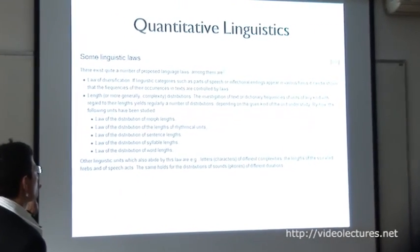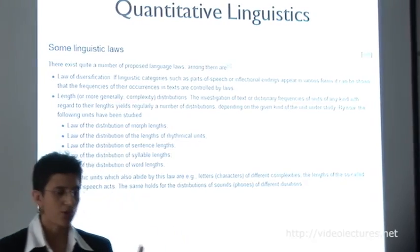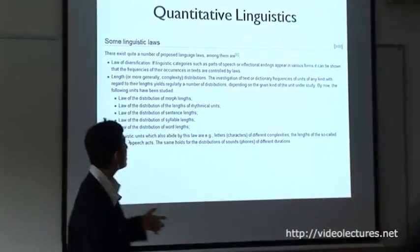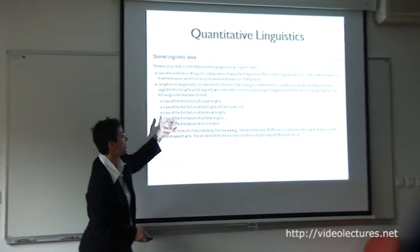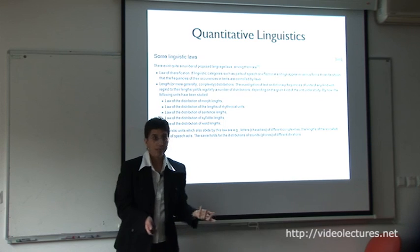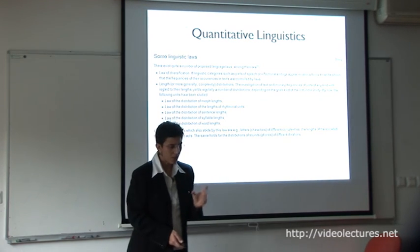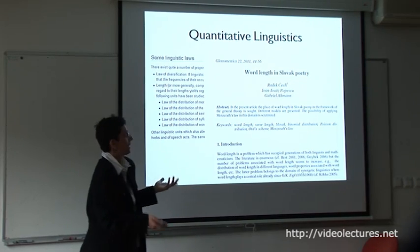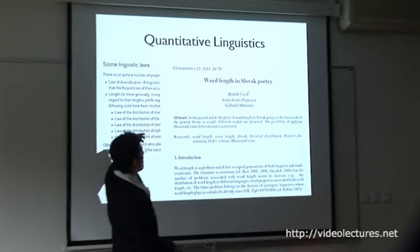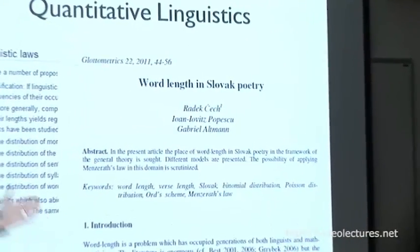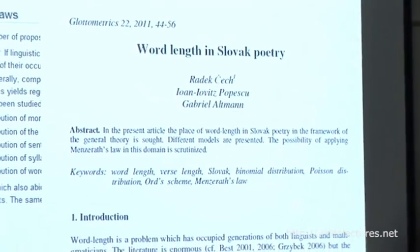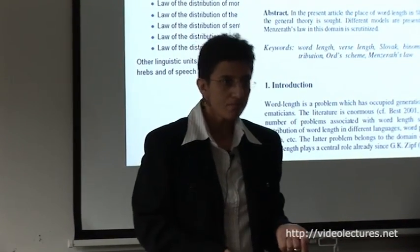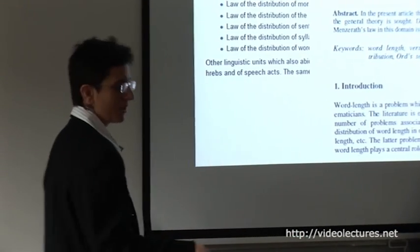One of the earlier datasets we found that looked at count data not really following a Poisson was word lengths. In quantitative linguistics there's a lot of interest in the distribution of lengths of words, sentences, and syllables. I have a small example later from a Hungarian dictionary. There's also a relatively recent paper about word lengths in Slovak poetry. In these works, researchers use count distributions and try to find ones that fit well.